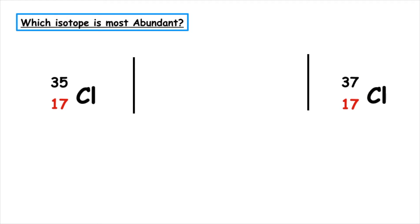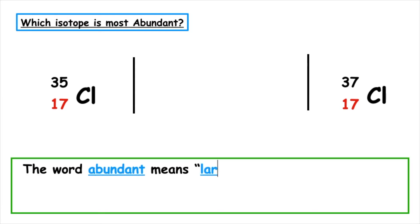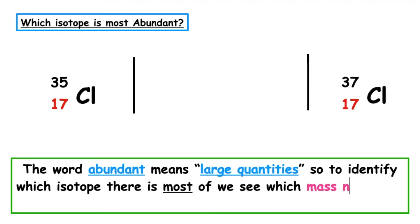Often you'll be asked which isotope is the most abundant. The word abundant means large quantities, so to identify which isotope there is most of, we have to see which mass number is closest to the relative atomic mass. Here we have chlorine 35 and chlorine 37.